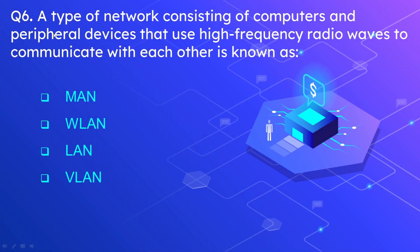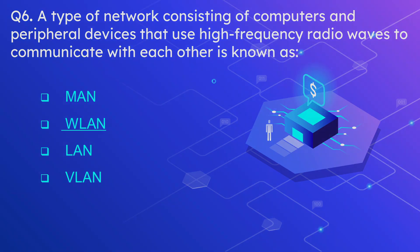Question number 6: a type of network consisting of computers and peripheral devices that use high frequency radio waves to communicate with each other is known as? The options are MAN, WLAN, LAN, and VLAN. The correct answer is WLAN, or Wireless LAN. Since the communication is done through high frequency radio waves, wireless LAN or wireless local area network is the correct answer.